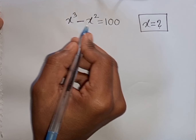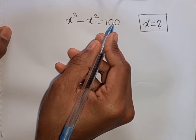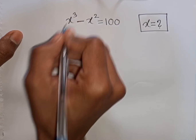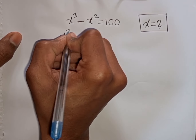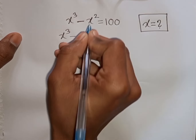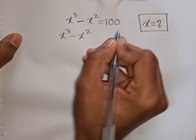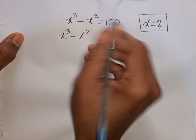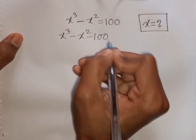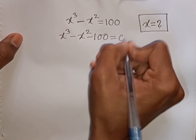x cubed minus x squared is equal to 100. Find the value of x. We have x cubed minus x squared. Then take 100 to the left side, so this will be minus 100, then equal to 0.